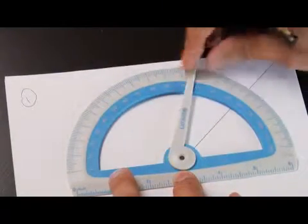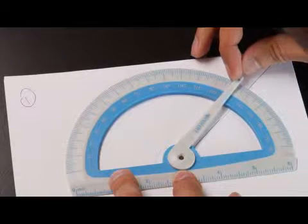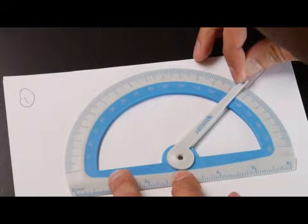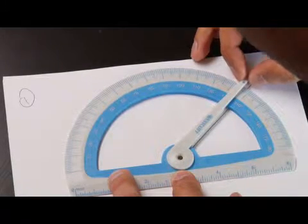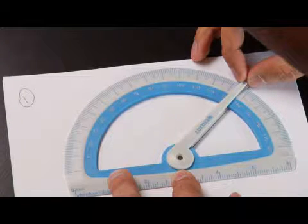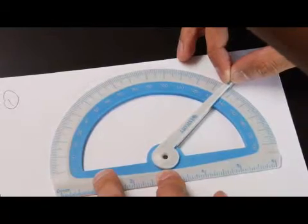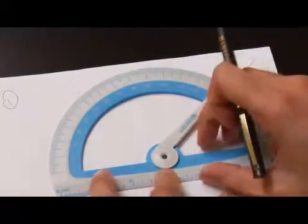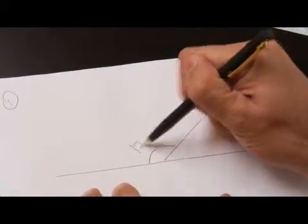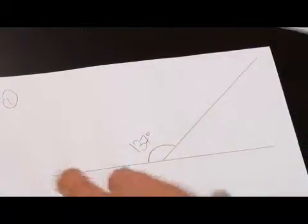Then we take our liner here and bring it all the way until it hits the line or matches with the line, and we're able to find out that this measurement is 137 degrees. So we have a 137 degree angle here.